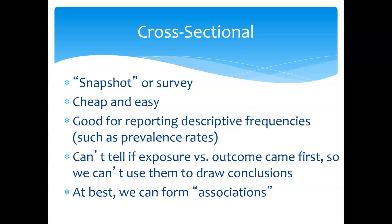The problem with cross-sectionals is that you can't tell if exposure versus outcome came first, so we can't use them to draw conclusions. If you do a survey, you have information about the person at that moment in time — when they completed the survey — but you don't know what came before and you don't know what came after. So you really can't draw conclusions with regards to cause and effect. At best, we can use them to form associations, like group associations.